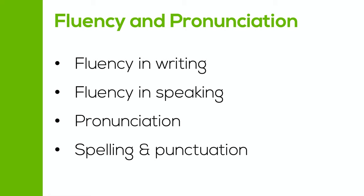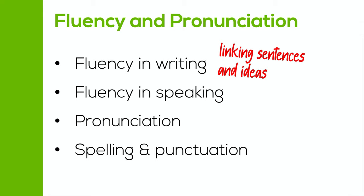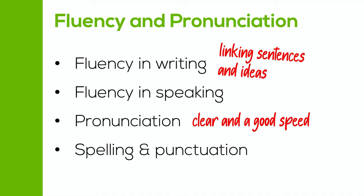And lastly, we have fluency and pronunciation. Fluency in writing and speaking involves things like linking sentences and linking ideas well. To do this well, you should be using different linking words like 'firstly,' 'next,' 'additionally,' 'moreover' — you can use those in speaking and writing and they show fluency. Also for the speaking sections, pronunciation is important. You need to be able to speak very clearly, but you do not need to have a native accent. Instead, make sure you speak clearly and at a good speed — not too fast, but also not too slow. For writing, you have to consider spelling and punctuation. Unfortunately, when writing your answer on the Duolingo English test there is no spell checker, so make sure you remind yourself of spellings of difficult words before you take the test.